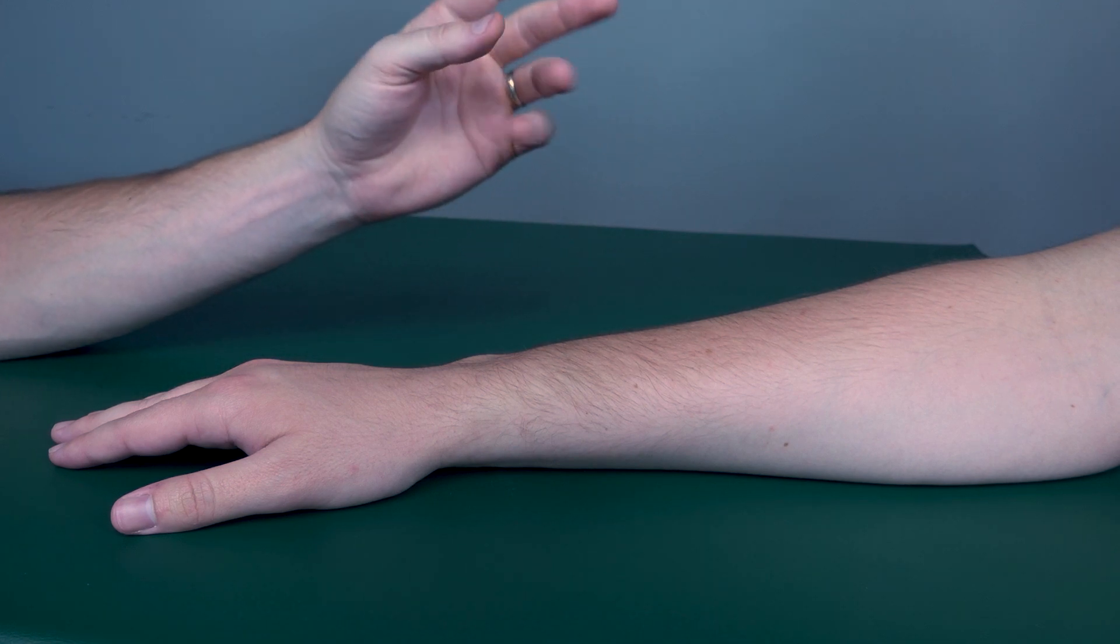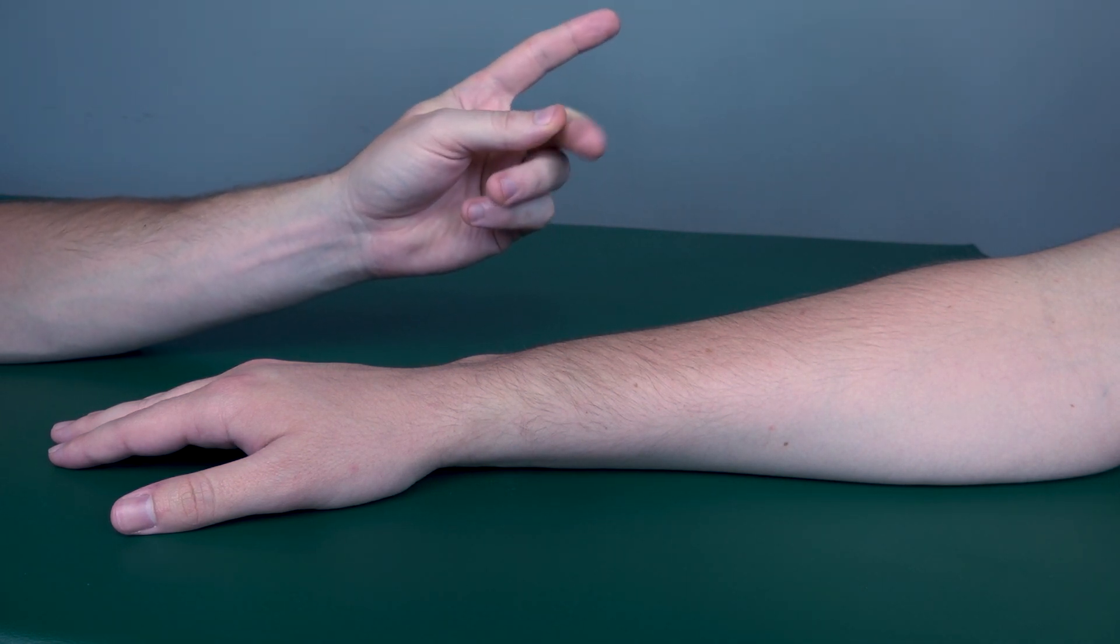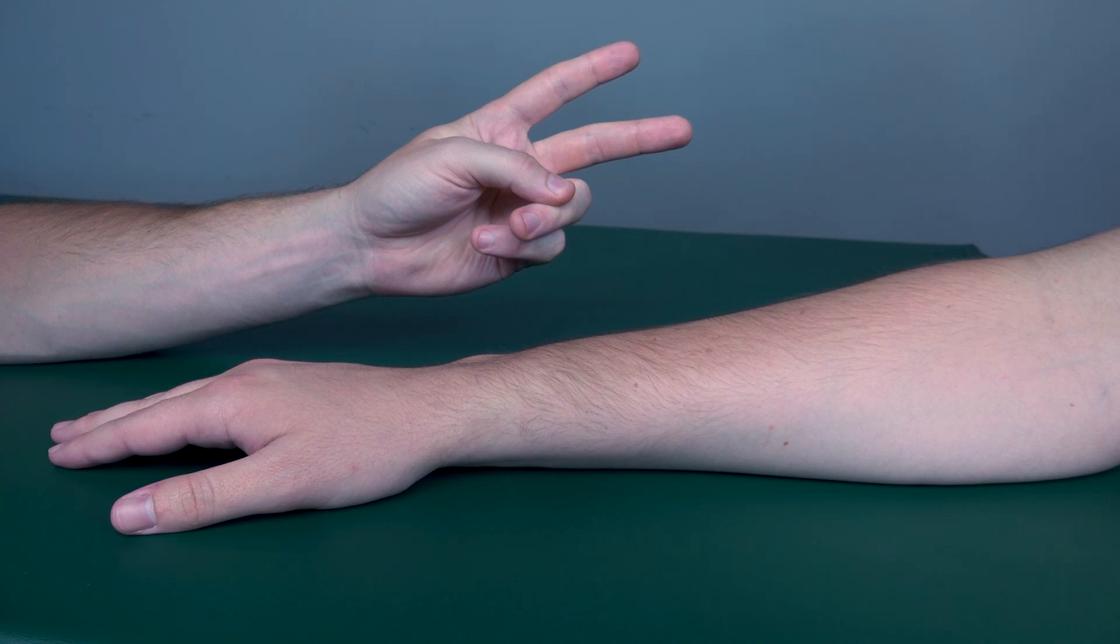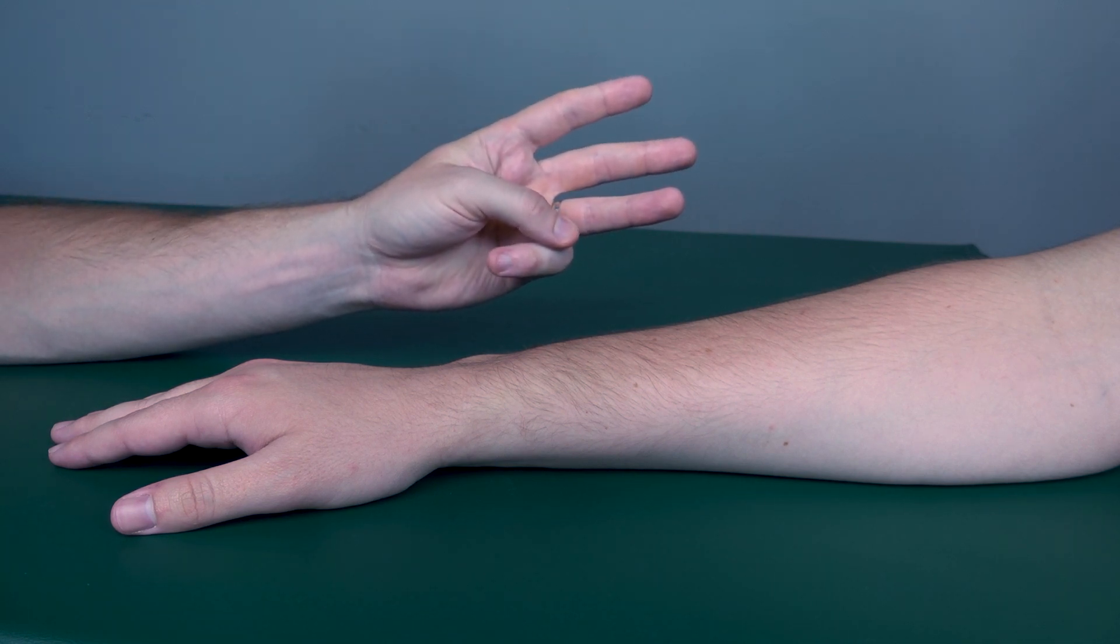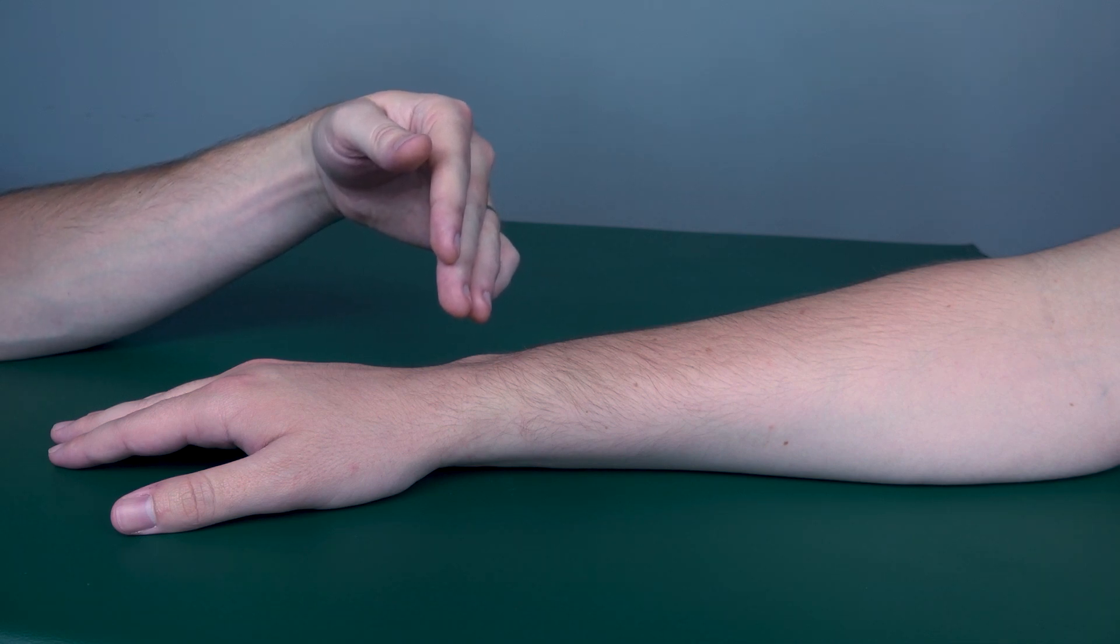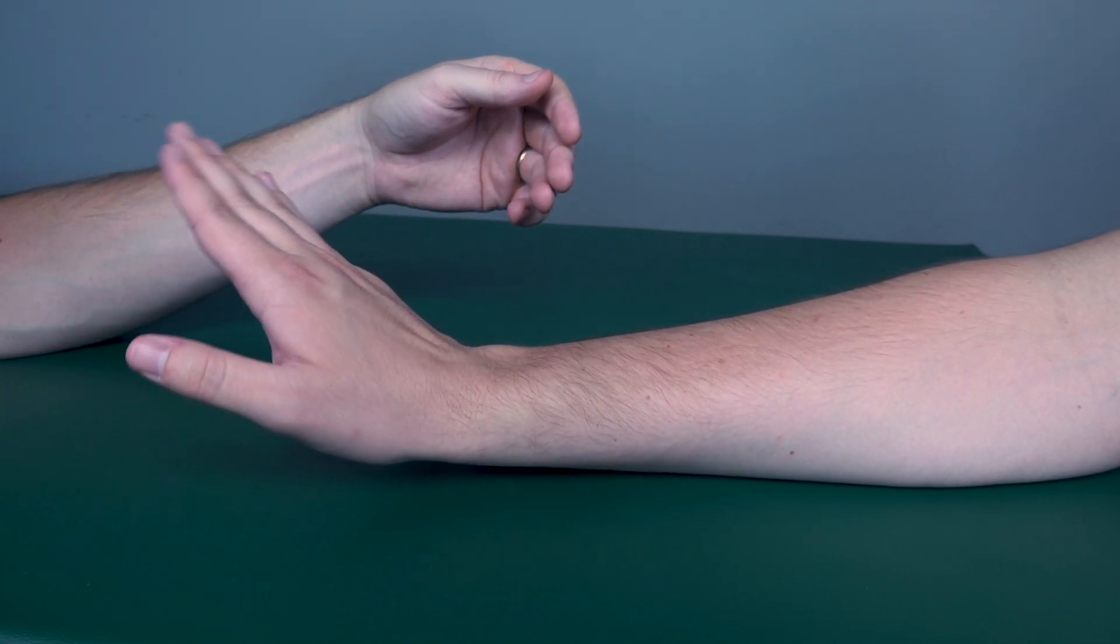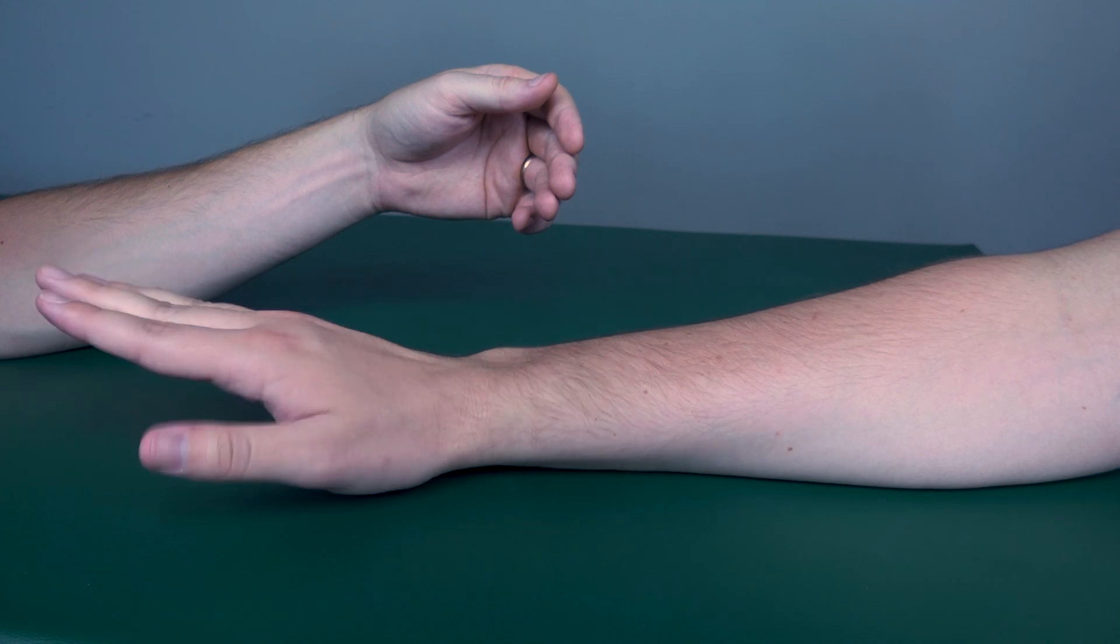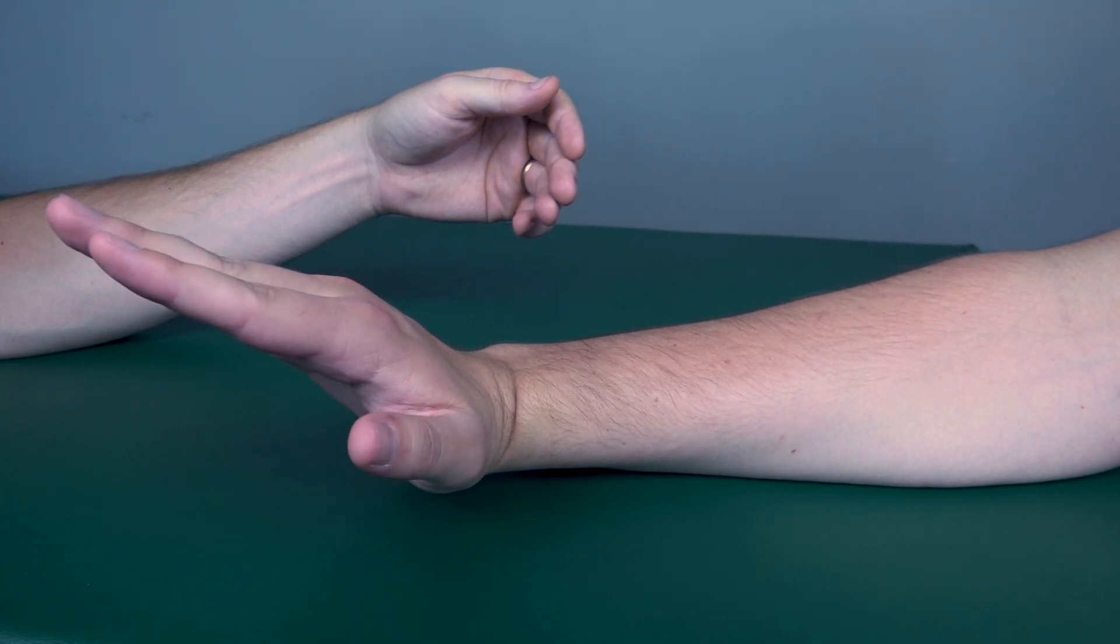We're going to look at the extensor carpi radialis longus, extensor carpi radialis brevis, and the extensor carpi ulnaris. So go ahead, bring your wrist into what the extensor carpi ulnaris would do for me, and now the longus, and now the brevis.